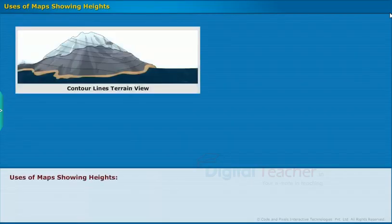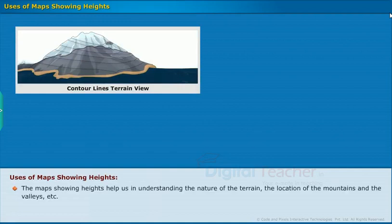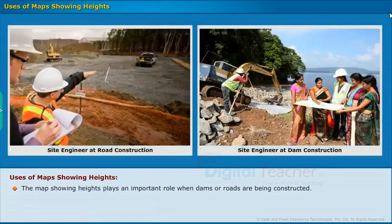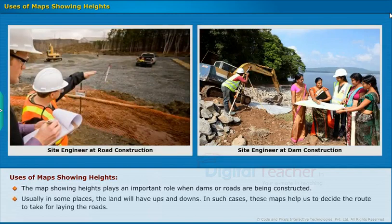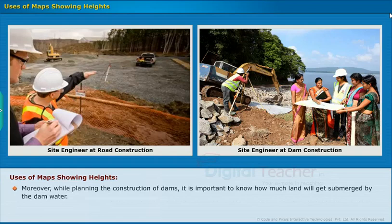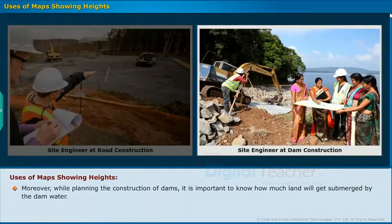Now let us learn how maps showing heights are used. These maps help us understand the nature of the terrain, the location of mountains, and valleys. Contour lines show the height and outline of the terrain. Maps showing heights play an important role when dams or roads are being constructed. In places where the land has ups and downs, these maps help us decide the route for laying roads. When planning dam construction, it is important to know how much land will get submerged by the dam water.